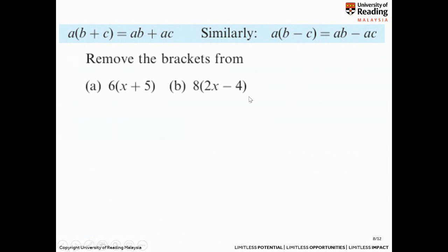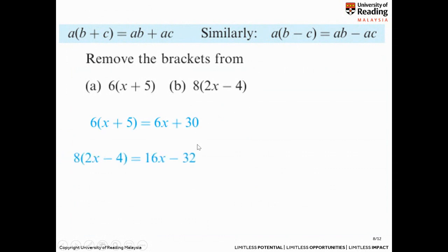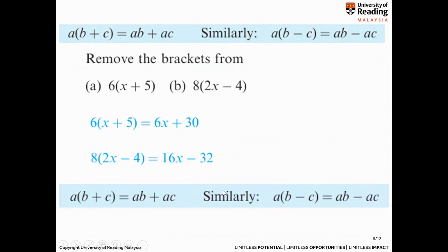This is the distributive formula: when you multiply a number or term by a bracket, you expand it as a(b+c) = ab + ac, or a(b−c) = ab − ac. Let's look at some examples — can you remove the brackets from part a and part b? You can get it straight away: expanding part a gives 6x times 5, so 30. Part b: 8 times 2x gives 16x, and 8 times minus 4 gives minus 32.